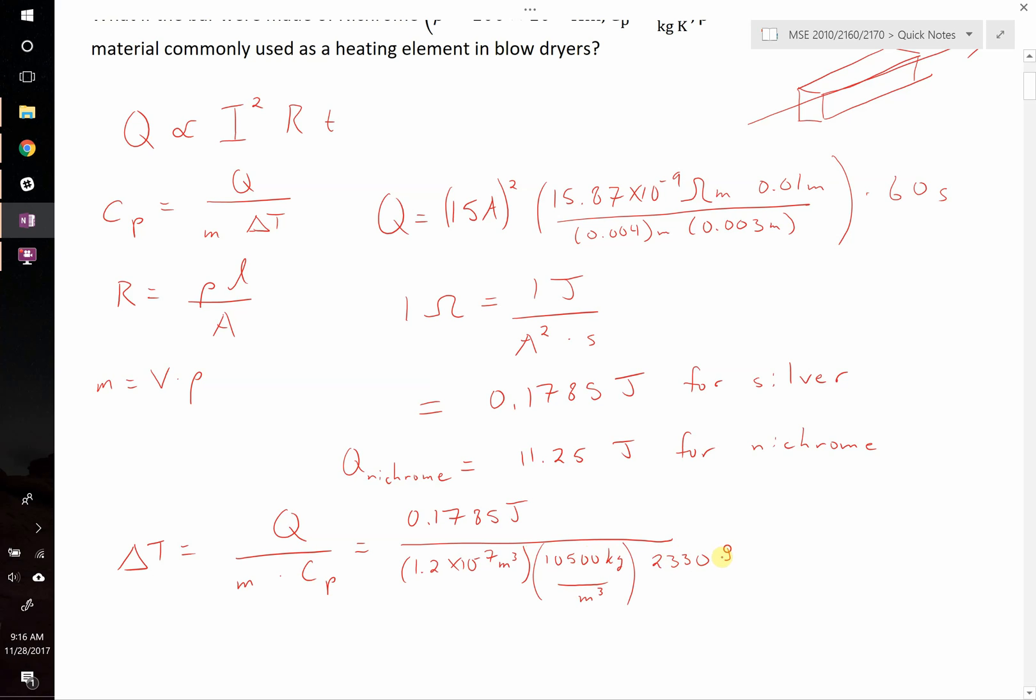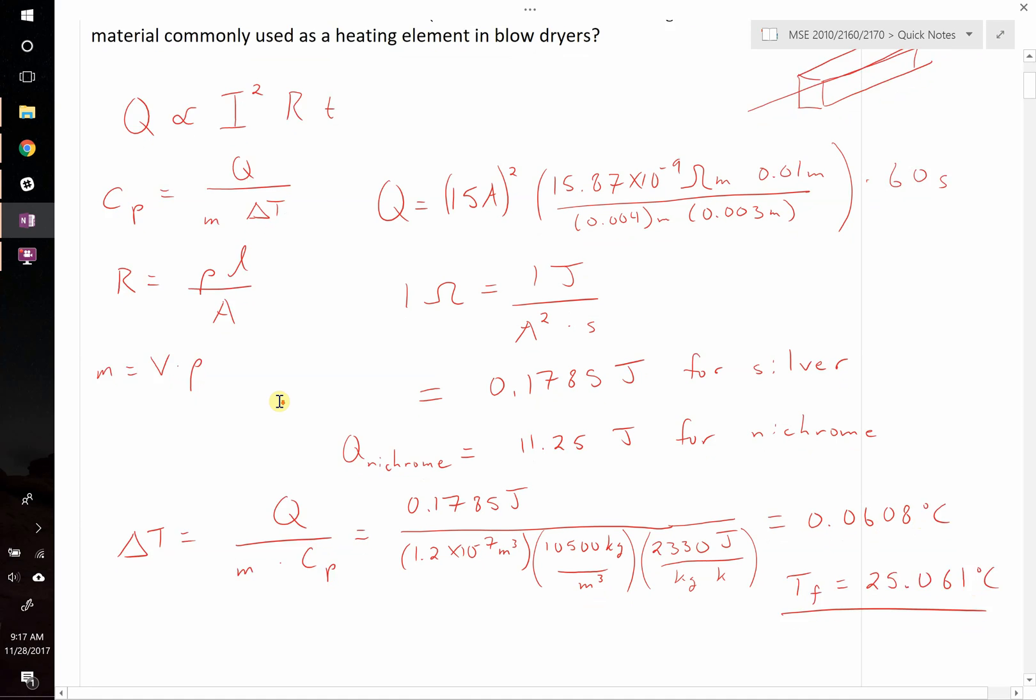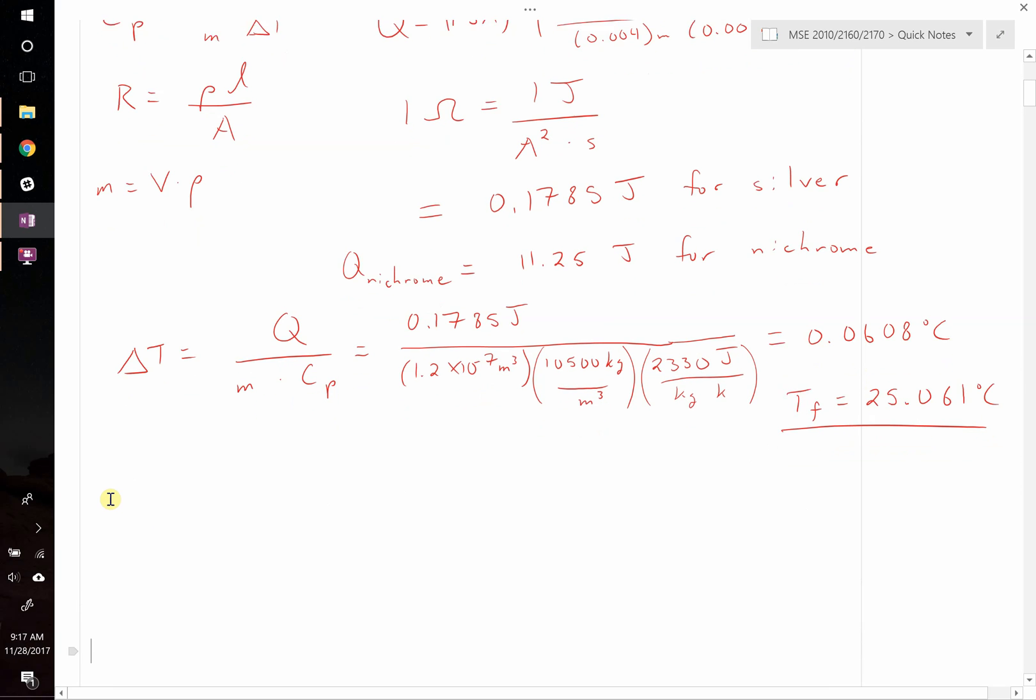Which for silver is 2330 joules per kilogram degree Kelvin. Punching everything in now, we find that our total change in temperature for silver is only 0.0608 degrees Celsius, or Kelvin. Right, that's the change in T. So, our final temperature is just going to be 25.061 degrees Celsius. So, it barely heats up at all. And that should make sense, because silver is a great conductor, and it actually absorbs a fair amount of energy before it warms up. So, let's move on to our next one, nichrome.